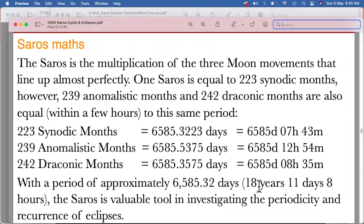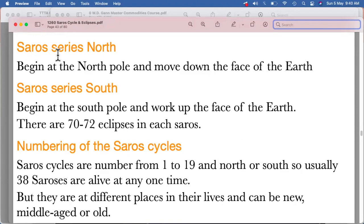So we have talked about this 18 years together. So as I've told you, Saros series north begin at the north pole and move down the face of the earth. Saros series south begin at the south pole and work up the face of the earth.